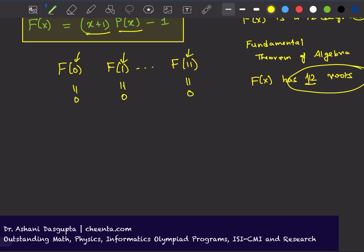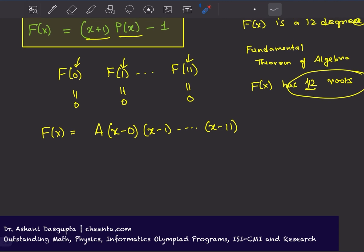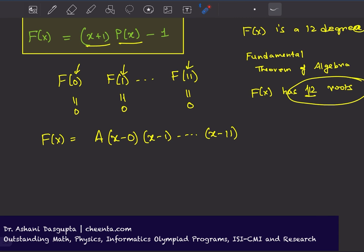We can write capital F(x) equals some leading coefficient capital A times (x-0)(x-1) up to (x-11), because these are the 11 roots and we may have some leading number capital A which we have to find out. This is how capital F(x) looks like.